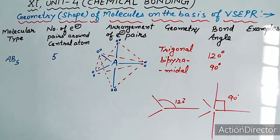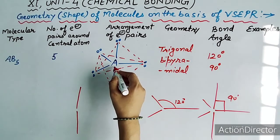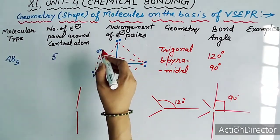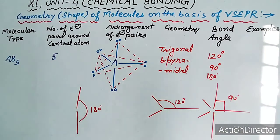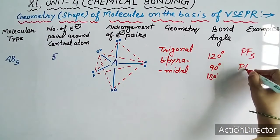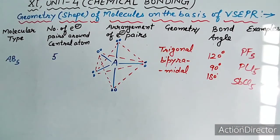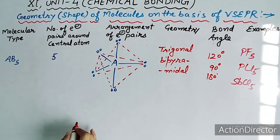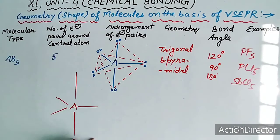AB5 में तीन types के bond angles मिलते हैं: जो तीन equatorial bonds हैं उनके बीच 120 degree, equatorial और axial bonds के बीच 90 degree, और दोनों axial bonds (एक above the plane और एक below the plane) के बीच 180 degree। Examples हैं PF5, PCl5, SbCl5। Equatorial bonds को E से और axial bonds को A से denote करते हैं।